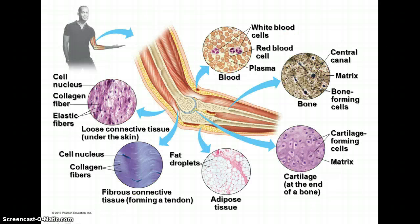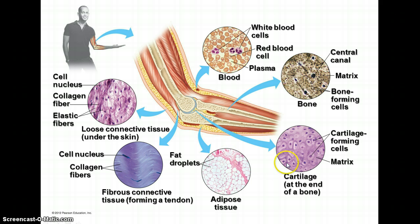The second kind of tissue is connective tissue. Here are collagen fibers in the extracellular matrix of loose connective tissue under your skin, and fibrous connective tissue forming a tendon from muscle to bone. We also have adipose tissue, which is subcutaneous fat for insulation; cartilage and bone in the skeletal system; and blood, which is also a connective tissue because it has cells suspended in plasma.